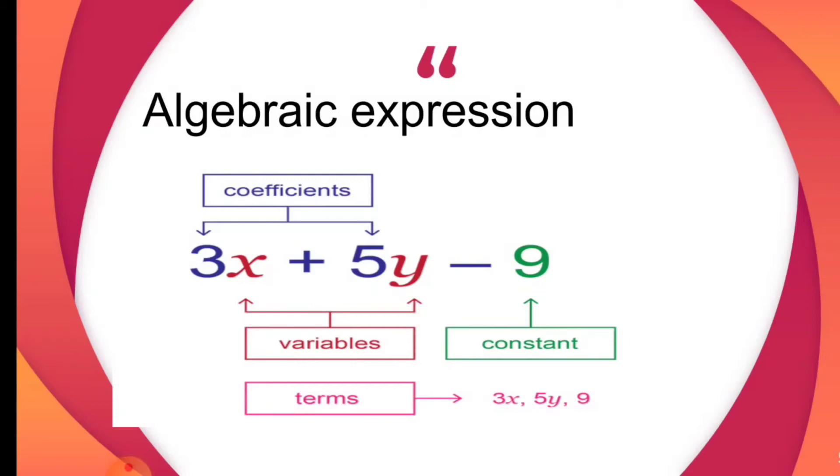Constant is nothing but numbers. The value of any number will never change. For example, the value of 9 is 9 only. We can't write value of 9 as 0 or value of 9 as 8. So this number is said to be a constant.